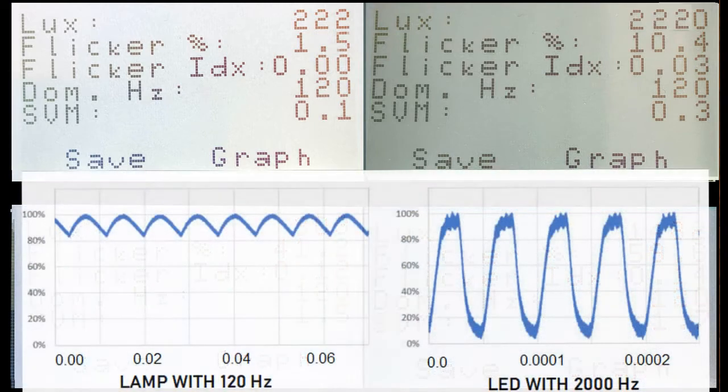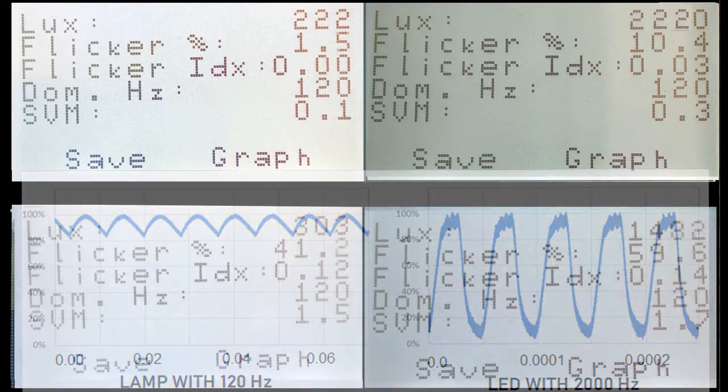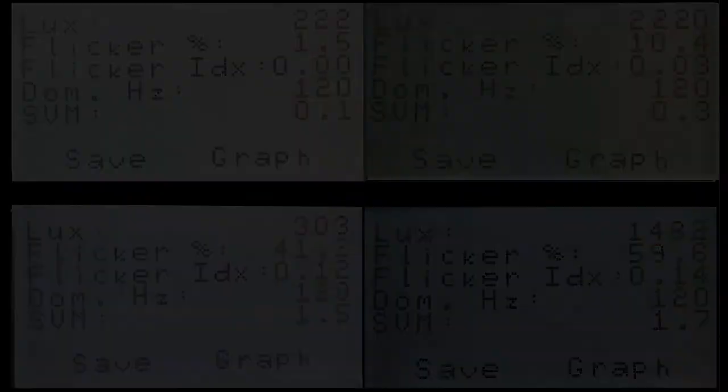Flicker frequency or dominant hertz is the number of fluctuations that occur in a second. Flicker that is visible to the human eye has a frequency of up to approximately 80 hertz.